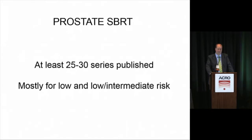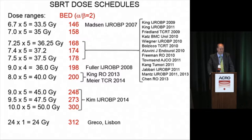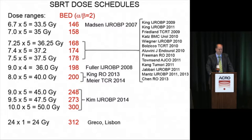What about stereotactic radiotherapy for prostate cancer — taking hypofractionation to the extreme from that Fowler plot? Prostate SBRT is in a situation where at least 25 to 30 single-institutional or multi-institutional studies have been published, with the vast majority for low or intermediate risk prostate cancer.